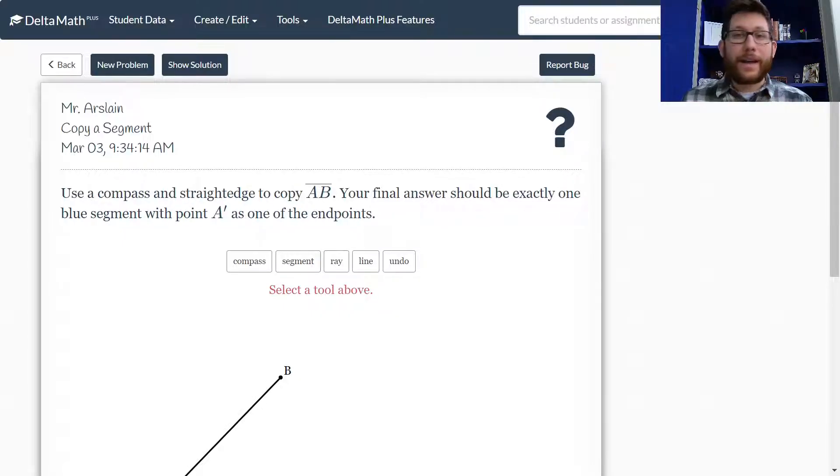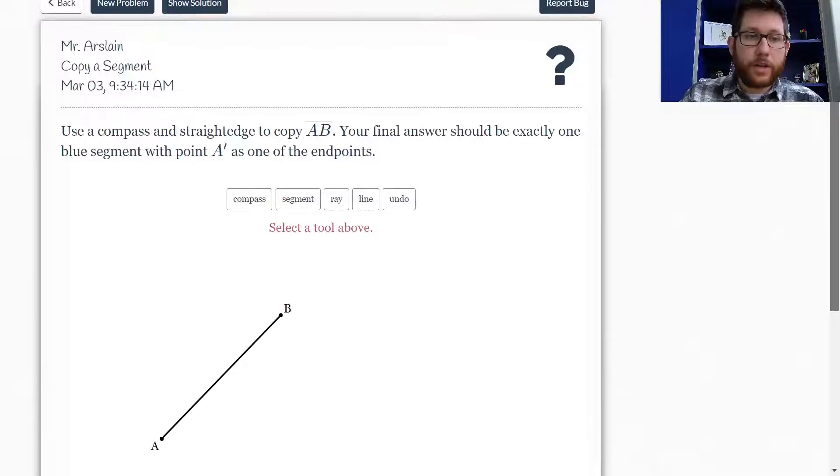And actually, before we do that, let's talk about what are constructions, what's a compass, what's a straightedge. So let's start with constructions. Constructions are a geometry activity where we take a circle and a straight line maker, a straightedge, and we copy or create different geometric items. So look at this particular example.